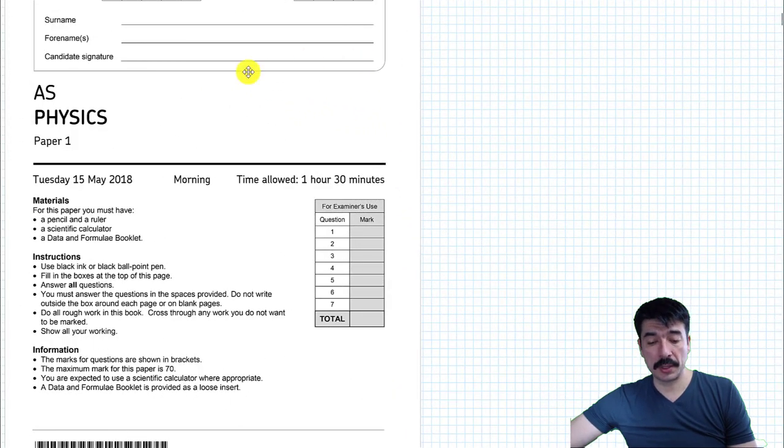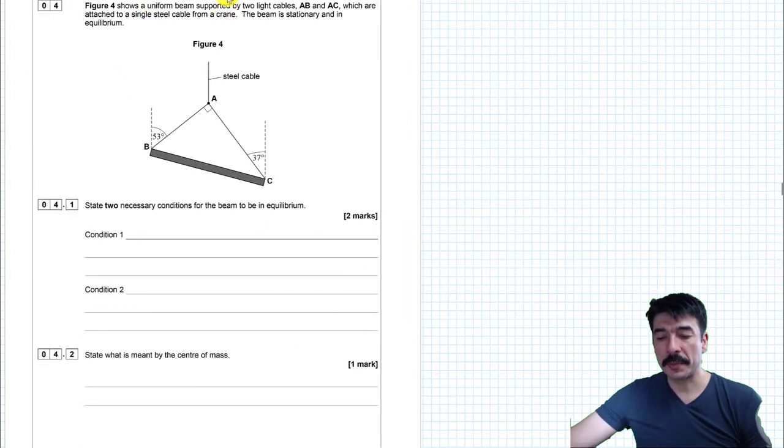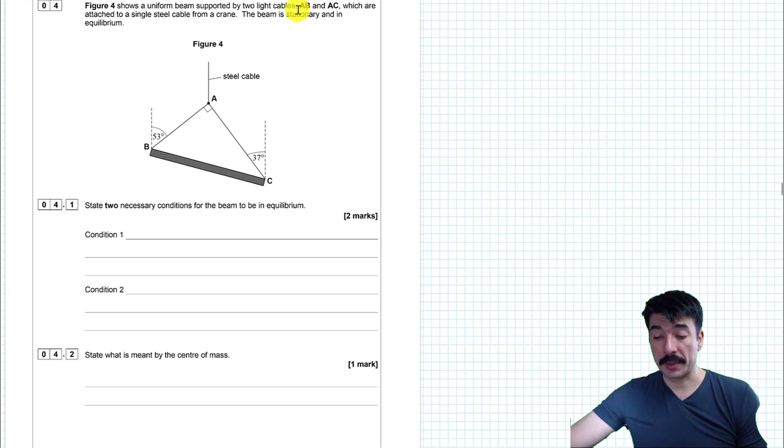OK, so I'm going to be looking at question four of the 2018 May AS Paper 1 physics for AQA. Figure 1 shows a uniform beam supported by two light cables, AB and AC, which are attached to a single steel cable from a crane. The beam is stationary and in equilibrium.